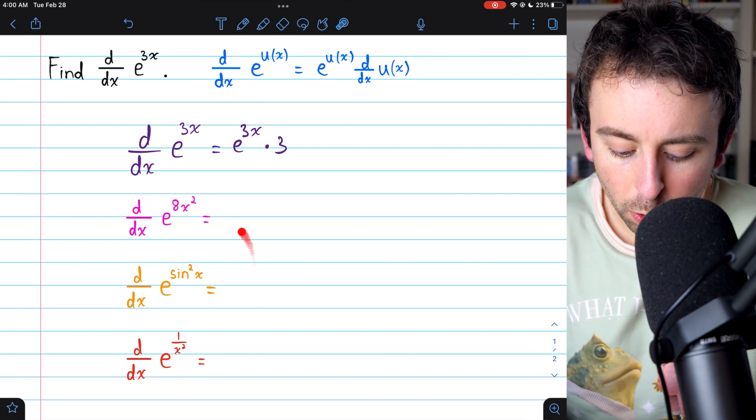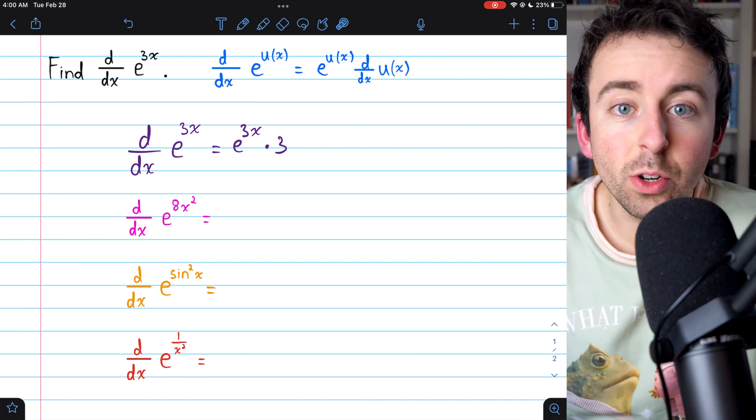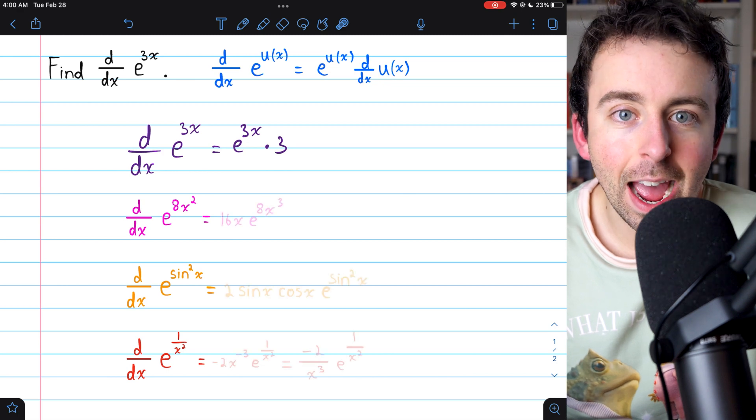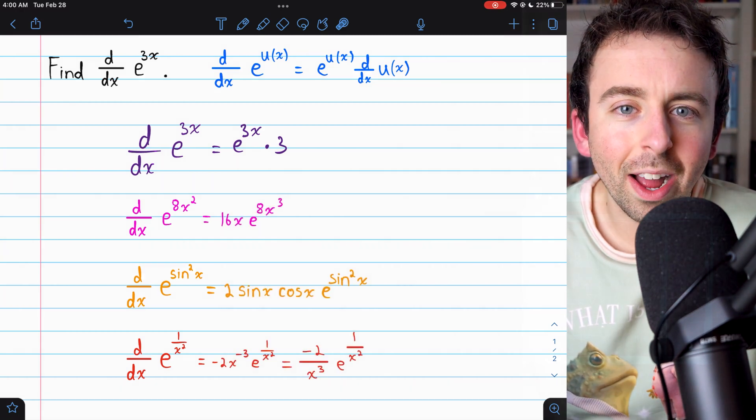And here are three more chain rule derivative problems with e to a power that you can try on your own. I'll put the answers on screen now. And there they are. Let me know in the comments how you did. Thanks for watching.